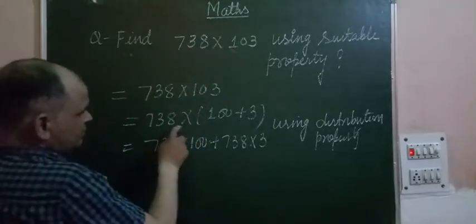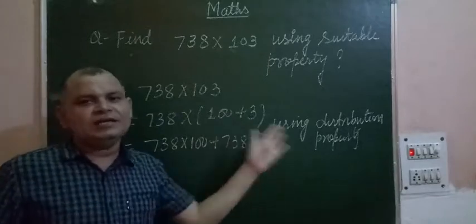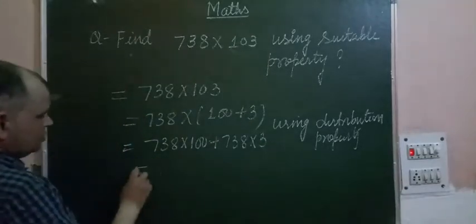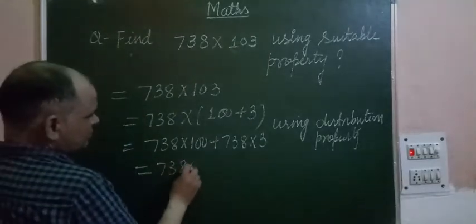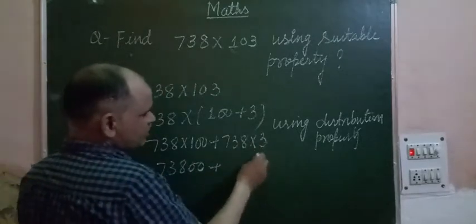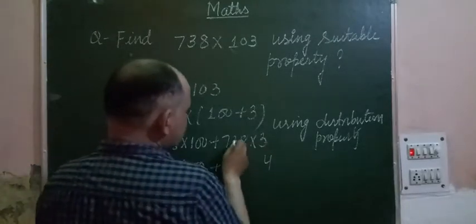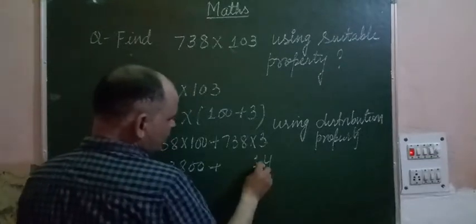Now 738 times 100 equals 73,800. Then we multiply by 3: 3 times 8 is 24, carry 2. 3 times 3 is 9, plus 2 is 11, carry 1. 3 times 7 is 21, plus 1 is 22. This gives us 2,214.